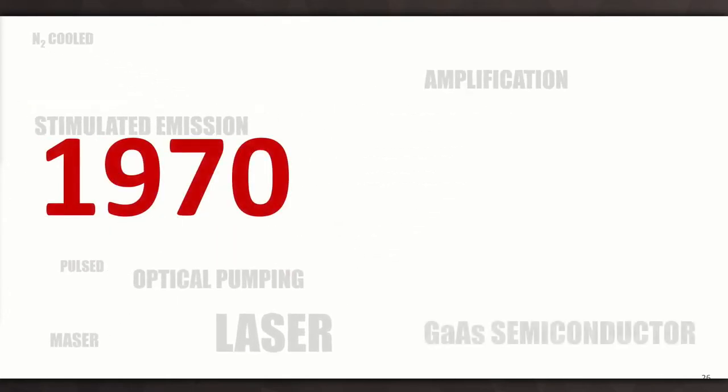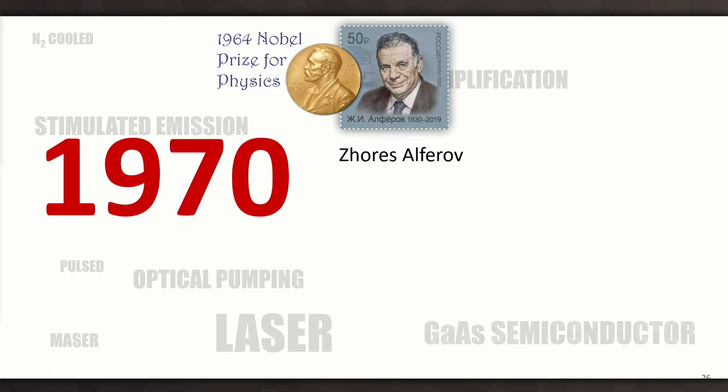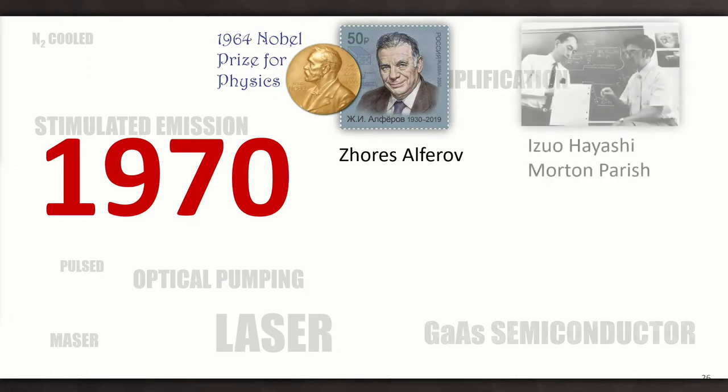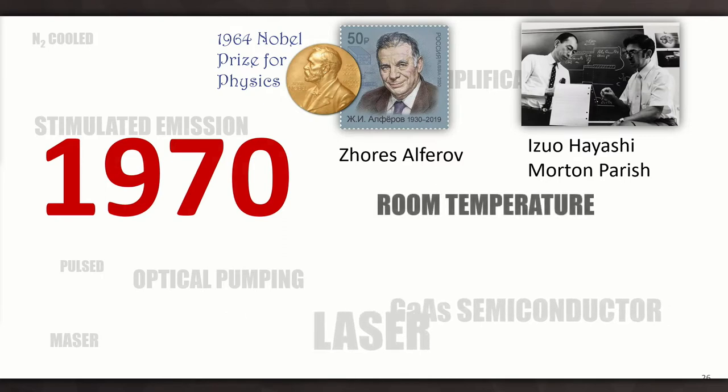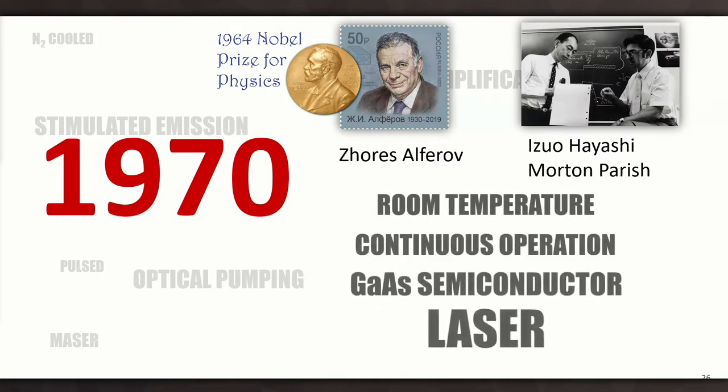And then in 1962, Robert Hall showed the pulsed semiconductor laser. Again, it's a pulsed device. Not very practical, not only because it was quite large, but also it had to be cooled with liquid nitrogen to actually lase. So 1970 brings all of these different ideas together and converts it into a practical device. Because Zhores Alferov, who shared the 1964 Nobel Prize for Physics, and then Hayashi and Panish. They brought together a device that worked at room temperature. It operated in continuous mode.